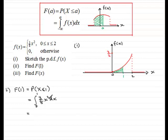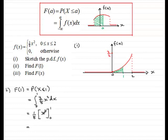The integral of three-eighths x squared: raise the power to give x cubed, divide by 3, so three-eighths times x cubed over 3 gives one-eighth x cubed. Putting one-eighth outside square brackets with limits 0 to 1: substituting 1 in gives 1 cubed equals 1; substituting 0 in gives 0. One minus 0 is 1, so we're left with one-eighth. F of 1 equals one-eighth — the probability of being less than or equal to 1 is one-eighth.